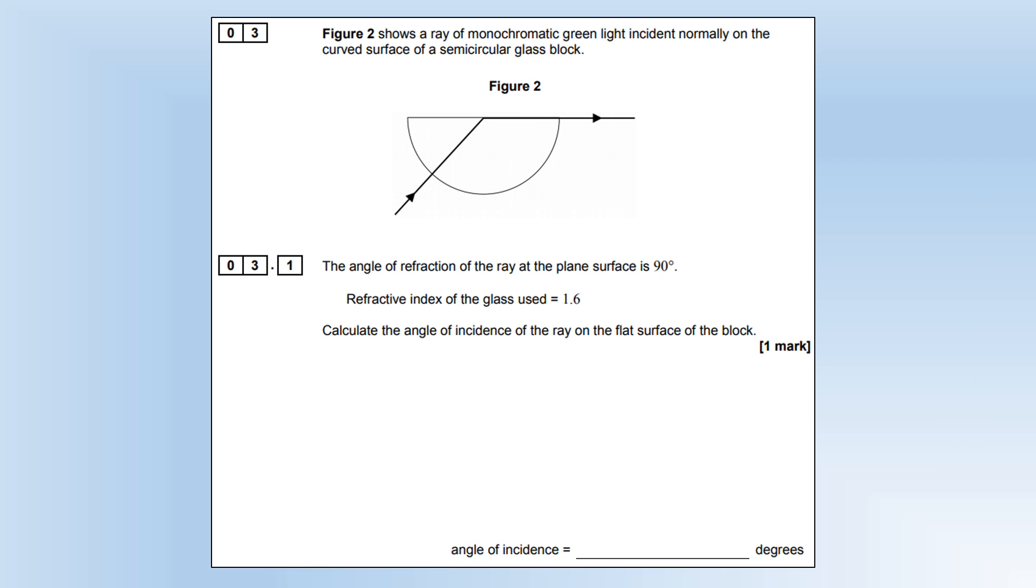Moving on to question 3, we're going to look at some refraction and total internal reflection. We've got monochromatic green light incident normally on the curved surface. The angle of refraction is 90 degrees, the refractive index of glass is 1.6, and the refractive index of air is 1. Calculate the angle of incidence. We're going to use Snell's law, but since air has a refractive index of 1 and sin(r) is 1, we can rearrange to make θ the subject, plug in the numbers, and it comes out as 39 degrees.